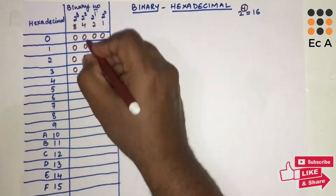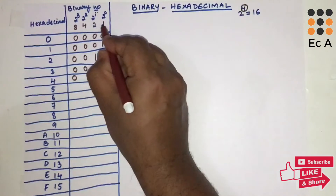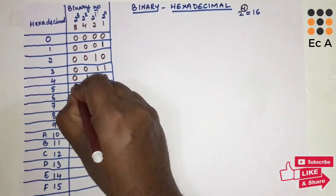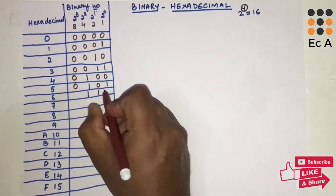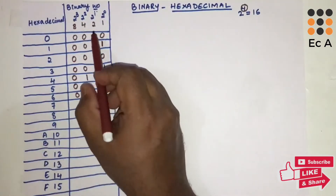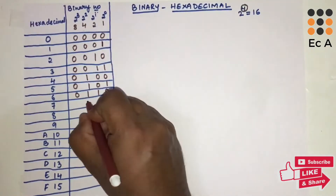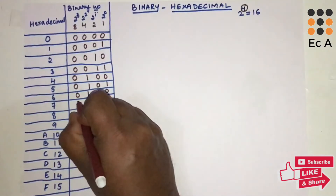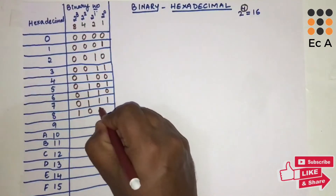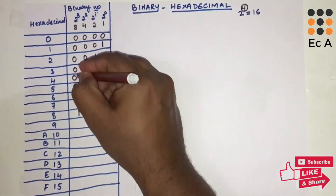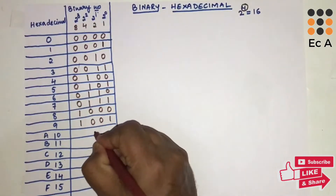To get 5, the 2⁰ and 2² bits are 1. To get 6, the 2¹ and 2² bits are 1. To get 7, the first three bits are 1 (4+2+1=7). To get 8, only the 2³ bit is 1. To get 9, the 2³ and 2⁰ bits are 1, remaining two bits are 0.